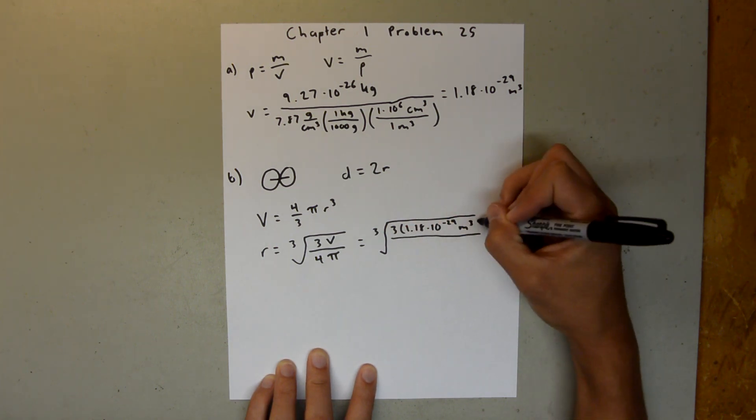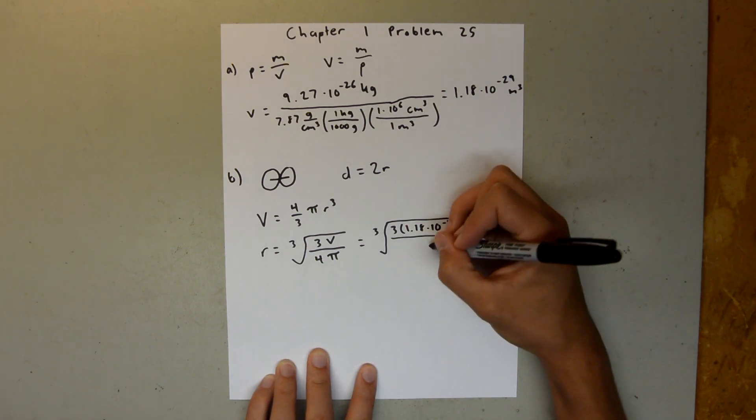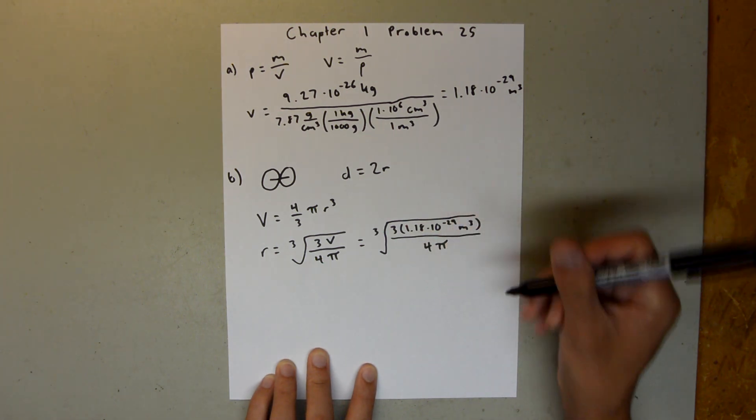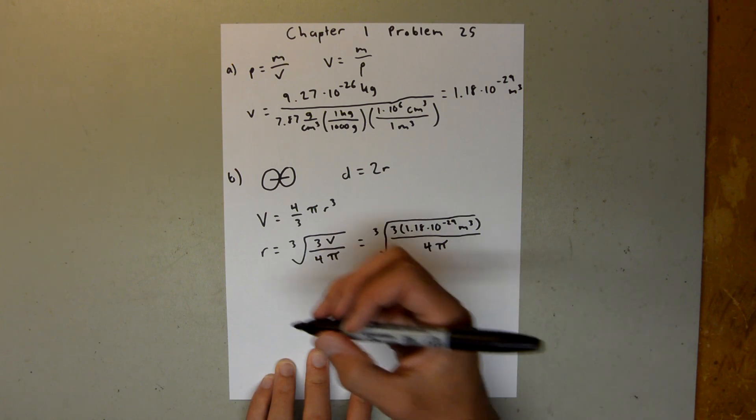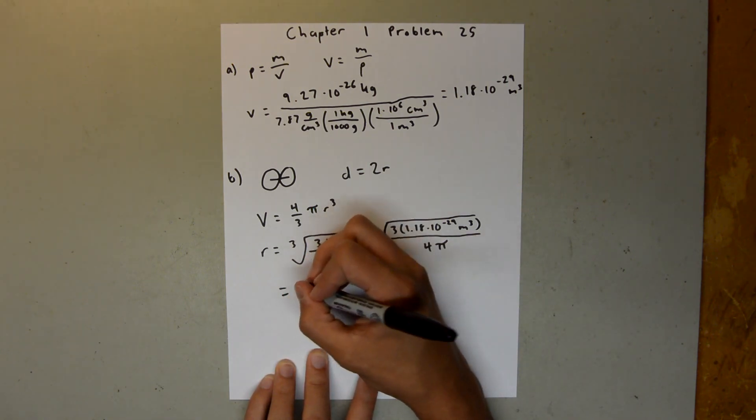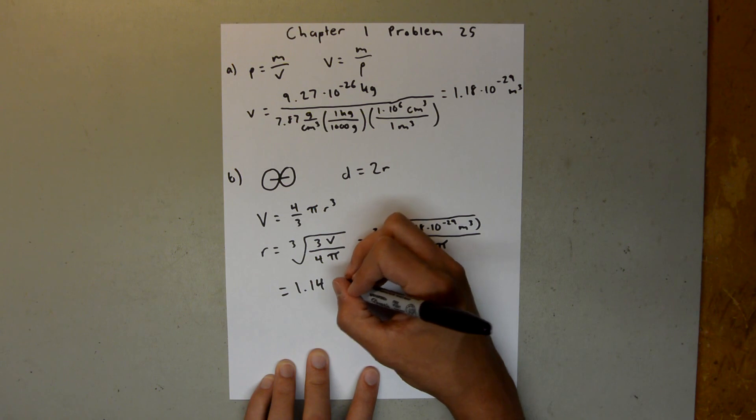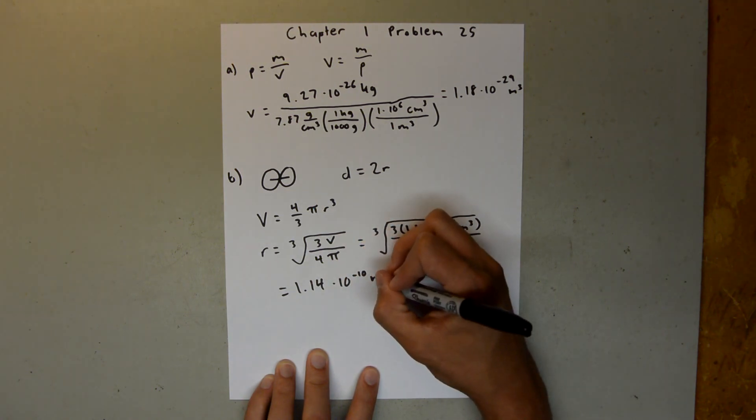And that's divided by 4 pi. And if you plug that into your calculator, you should get that the radius is equal to 1.14 times 10 to the negative 10th meters.